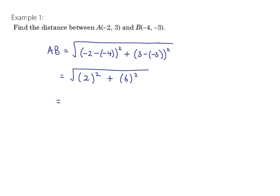That gives the square root of (negative 2 plus 4) squared plus (3 plus 3) squared, which is the square root of 2 squared plus 6 squared, so 4 plus 36, giving the square root of 40. It doesn't matter whether you subtract in one order or the other — because of the squaring, you get the same result either way. Since 40 equals 4 times 10, this simplifies to 2√10 units.